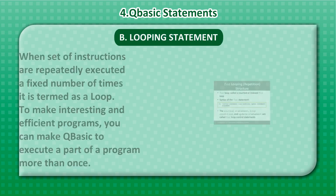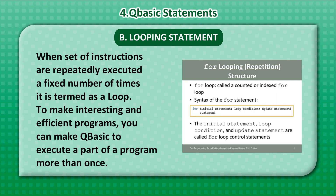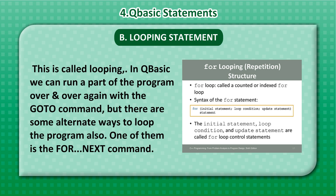Looping statement. When a set of instructions are repeatedly executed a fixed number of times, it is termed as a loop. To make interesting and efficient programs, you can make QBasic execute a part of a program more than once. This is called looping. In QBasic, we can run a part of the program over and over again with the go to command, but there are alternate ways to loop the program also. One of them is the for next command.